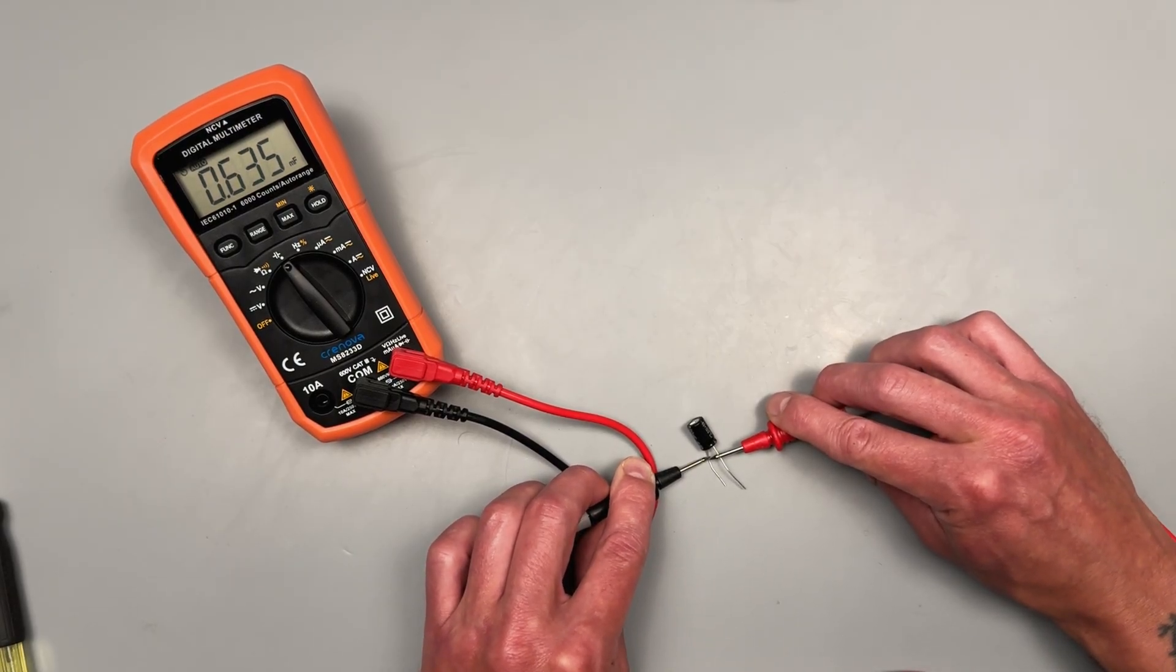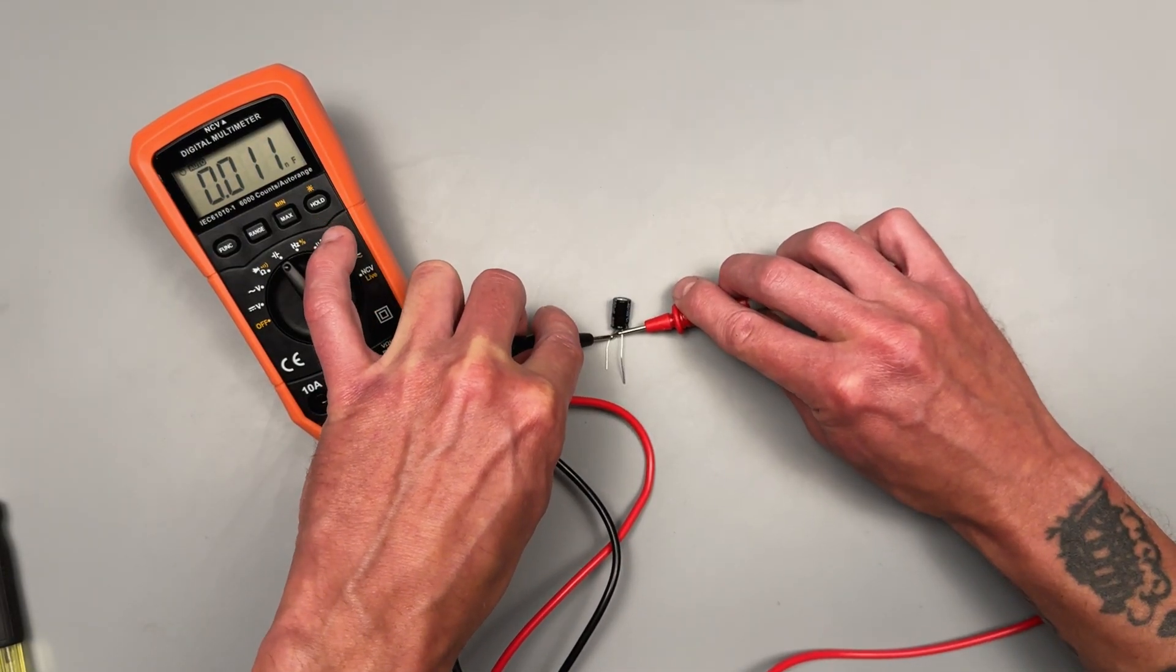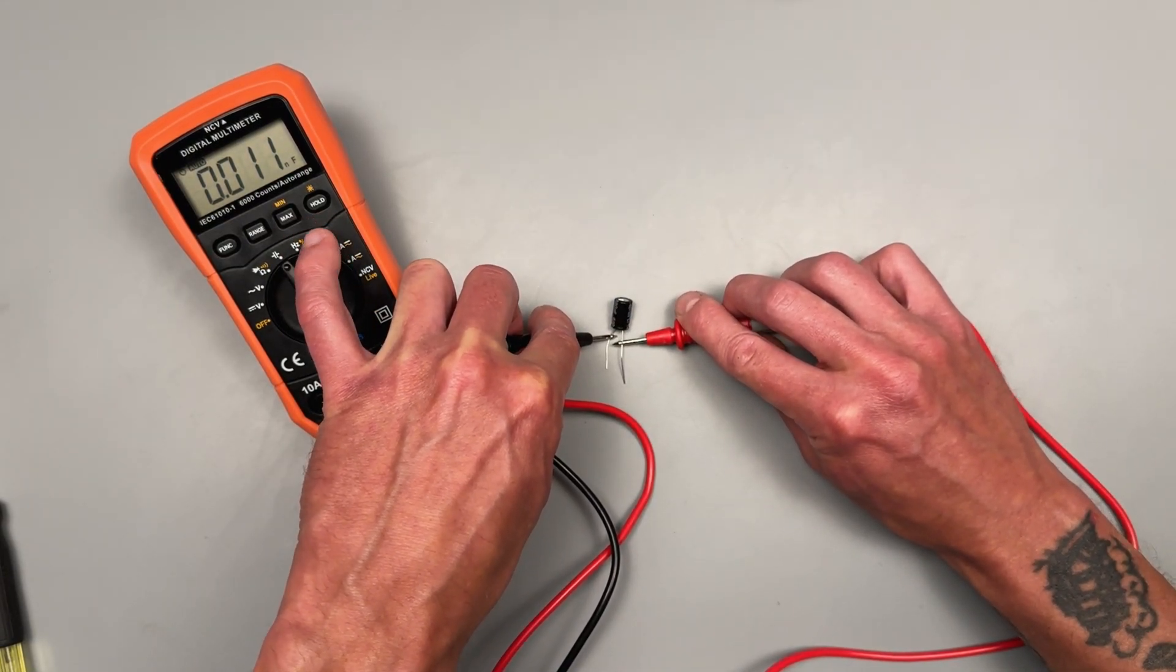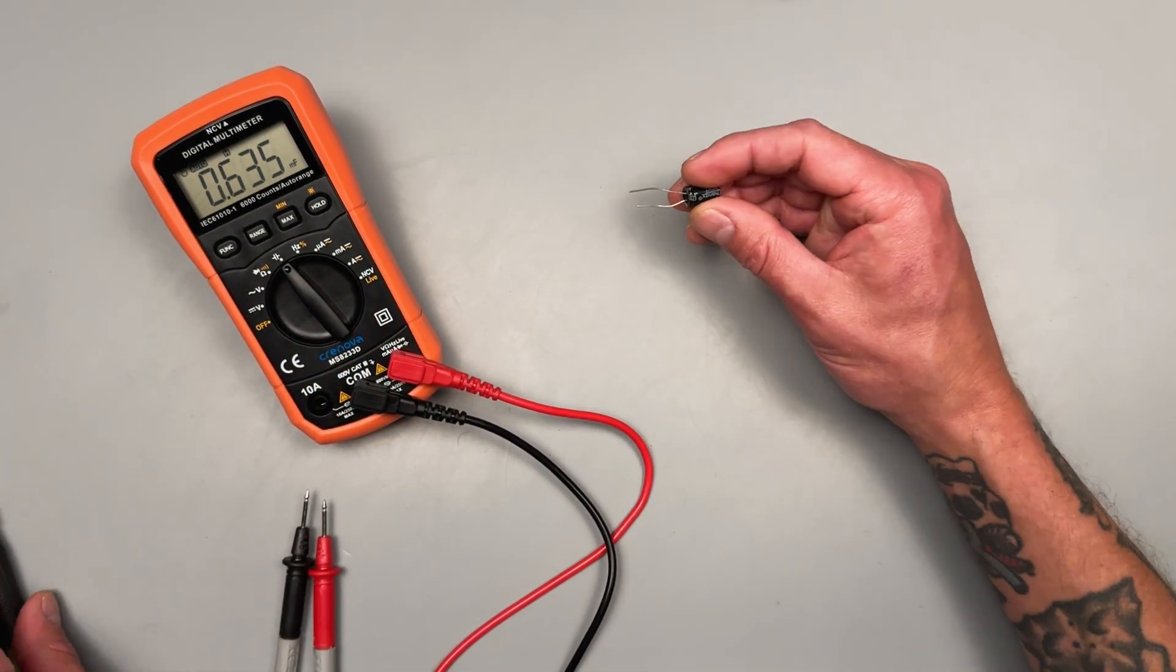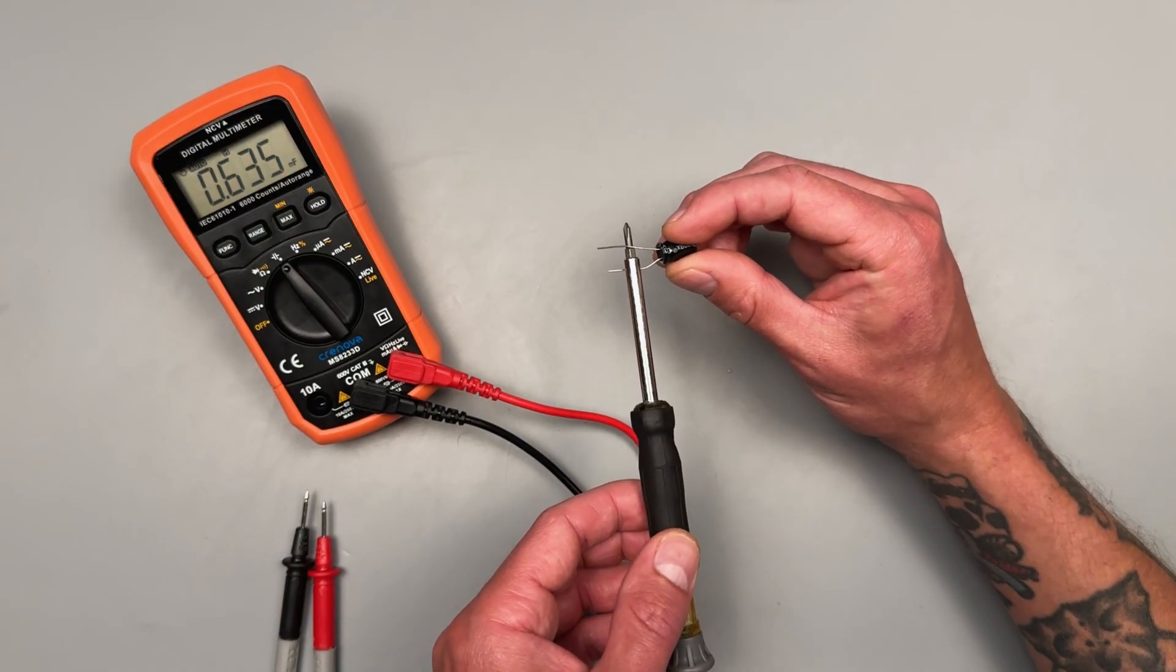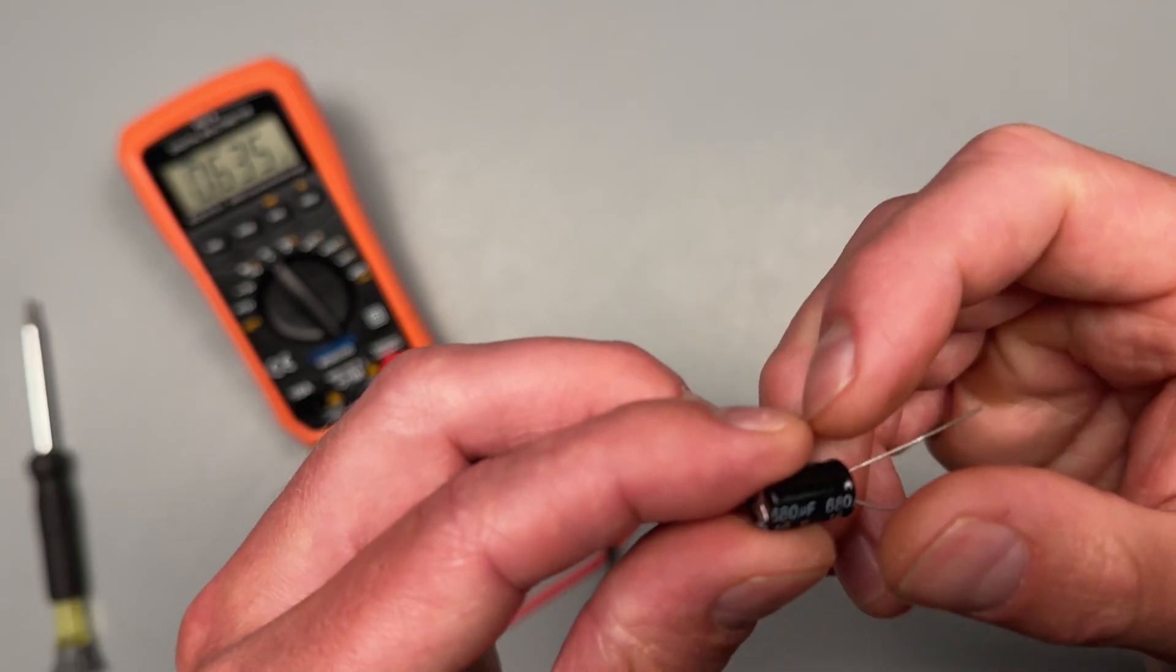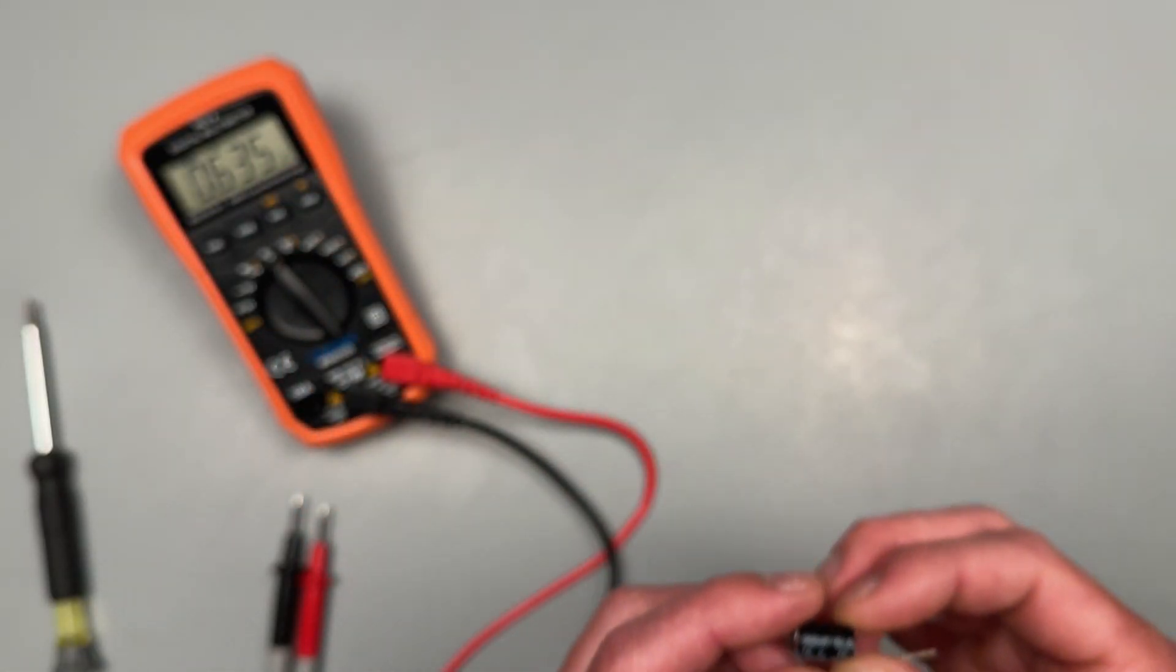So I think that's 635 microfarads. And then you can always hit the hold button. Let's try to move up here like this. This is where those alligator clamp leads would come in handy. We can hit that hold button and it'll save that value for us. We'll want to make sure to discharge our capacitor after we've charged it up before we start handling it. Okay. And this capacitor is rated for 680 microfarads. That's within 10%.